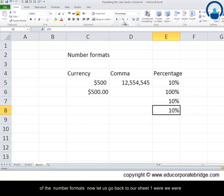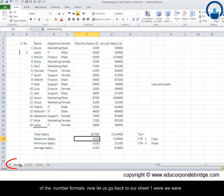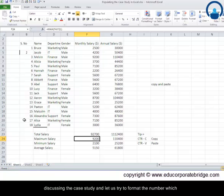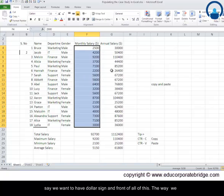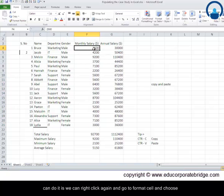Now let us go back to our Sheet 1 where we were discussing the case study, and let us try to format the numbers which are given here. So monthly salary, what we find, is in dollars, and let's say we want to have dollar signs in front of all of these.